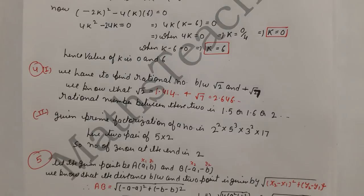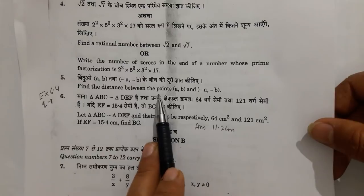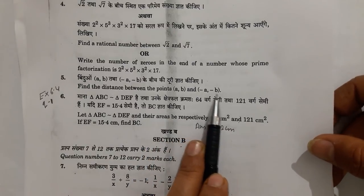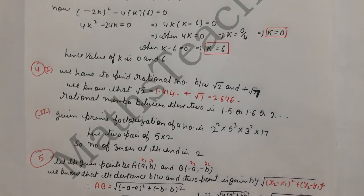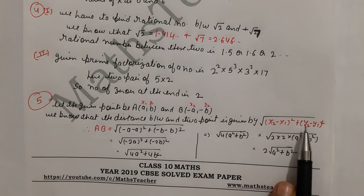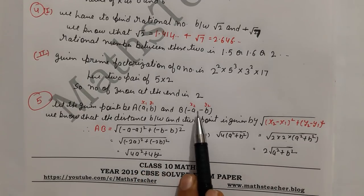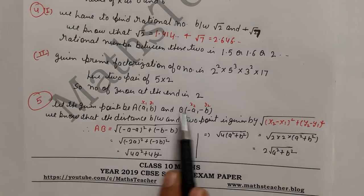Next question: find the distance between the points. This is also a very easy question. The formula is √[(x2 - x1)² + (y2 - y1)²]. So x1, y1 and x2, y2.